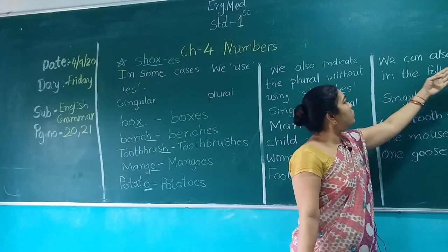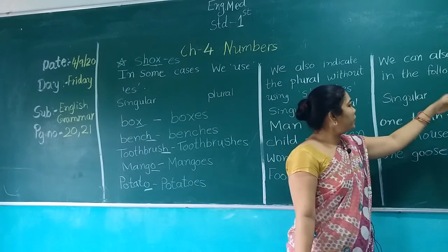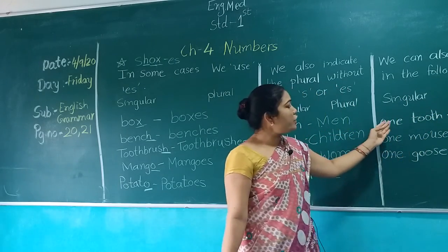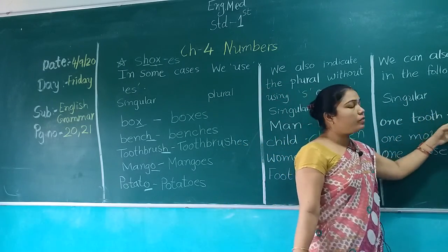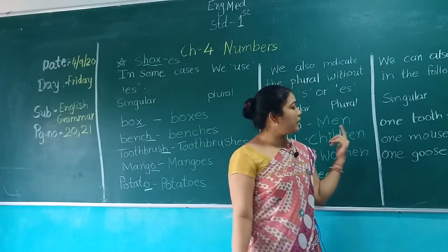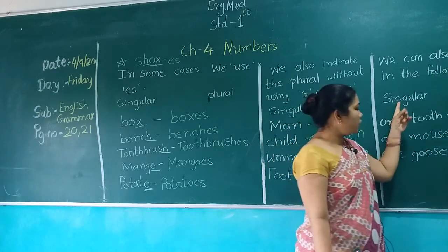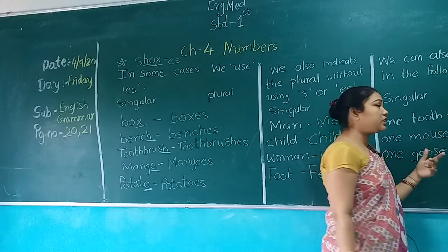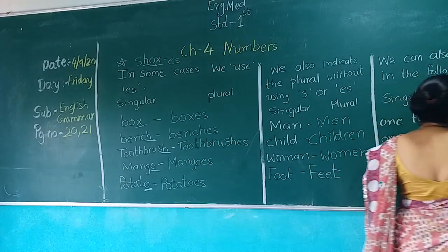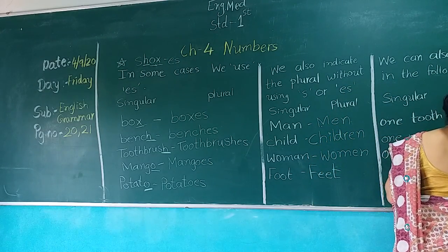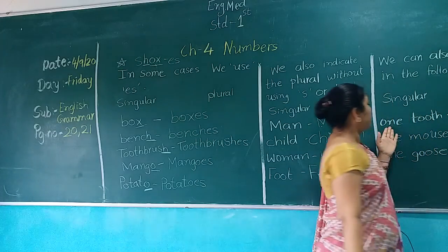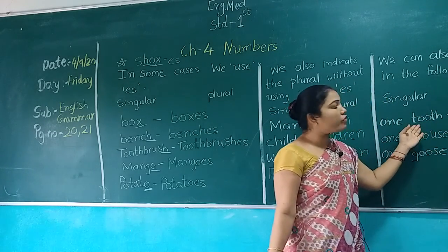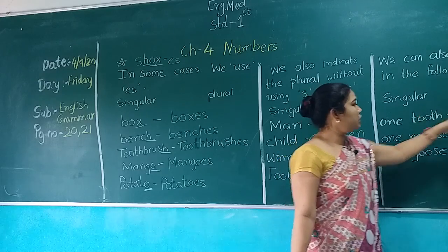We can also learn in the following way — singular and plural. One tooth: if one tooth is there in singular form, plural form — five teeth. T-E-E-T-H, Teeth. Tooth — Teeth. What is the plural form of tooth? Teeth.